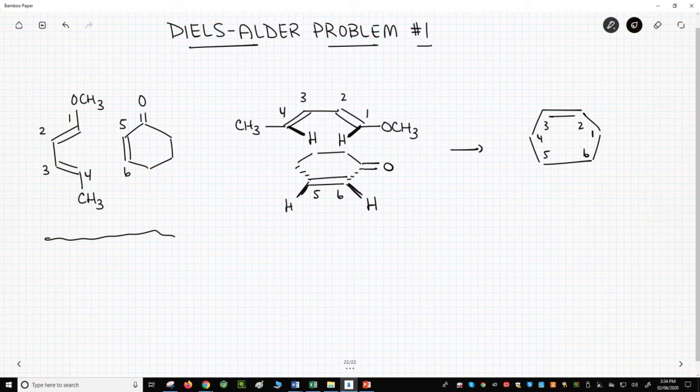The groups that are up in the middle picture, these four hydrogens, are also up in our product. Carbon 1, C4, C5, and C6.